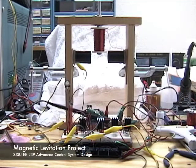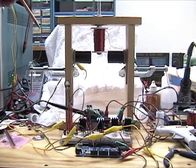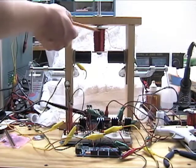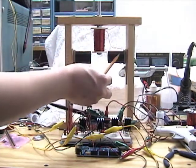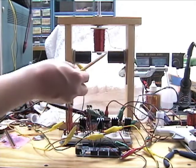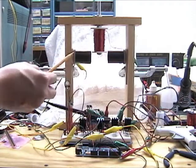So this is a maglev system that I built for one of my classes in school. We've got an electromagnet here and there's a light source on this side with a high intensity LED, and there's a CDS photocell on this side that measures how much light comes across.